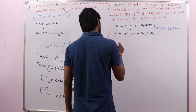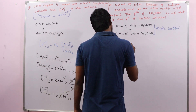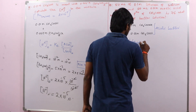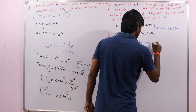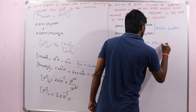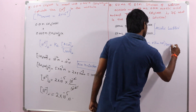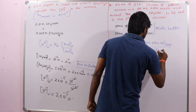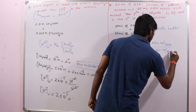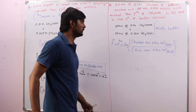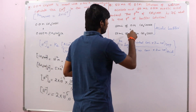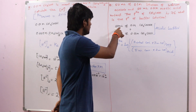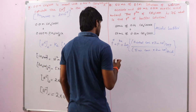We have discussed different formulas; depending on the information provided we choose the suitable one. Here, volumes and concentrations of both salt and acid are given, so the formula to use is: pH = pKa + log[(initial concentration × initial volume of salt) / (initial concentration × initial volume of acid)].